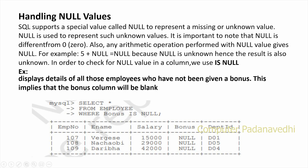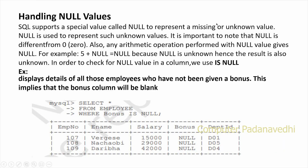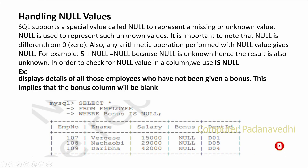Next is handling null values. It is very important to know that if we have a null value, SQL supports a special value called NULL to represent a missing or unknown value. NULL is used to represent such unknown values. It is important to note that null is different from zero. For example, 5 plus NULL is NULL, because NULL is unknown, hence the result is also unknown.